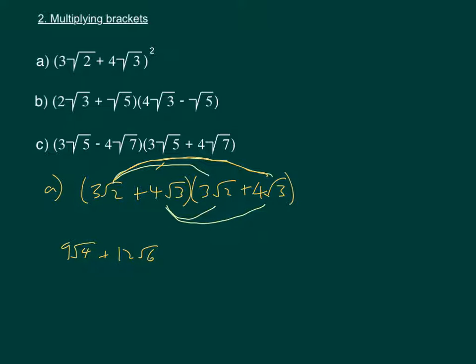Then we've got 4 root 3 times 3 root 2, which is another 12 root 6. And then we've got 4 root 3 times 4 root 3, which is 16 root 9, which we need to simplify.